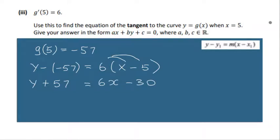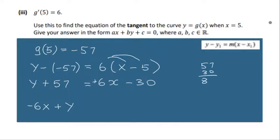Therefore we're going to move everything to the left. Bring the 6x over, so that plus 6 becomes negative 6. The y stays on the left as plus y. Then bring over the negative 30 and add it to 57: 57 plus 30 is 87. And that's your tangent.